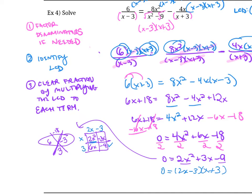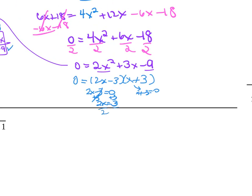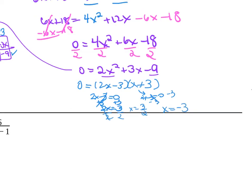Then we use zero product property to solve what x equals. Here it's 2x minus 3 equals 0 and x plus 3 equals 0. Add 3 to both sides, we get 2x equals 3, then divide by 2. We notice that x equals positive 3 halves, and here we subtract 3, so x equals negative 3.